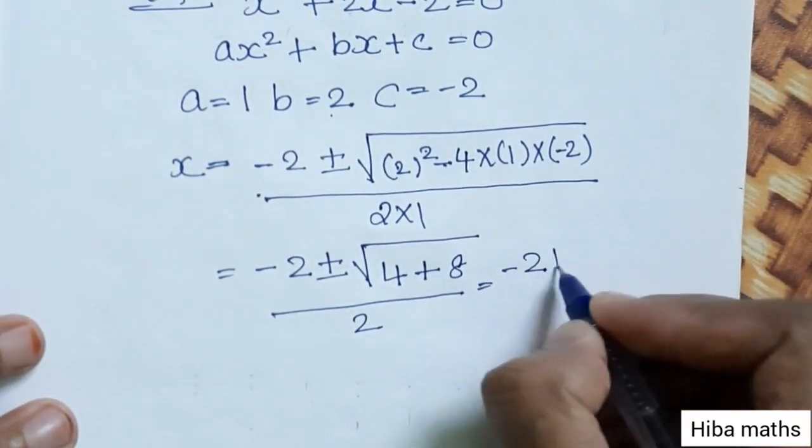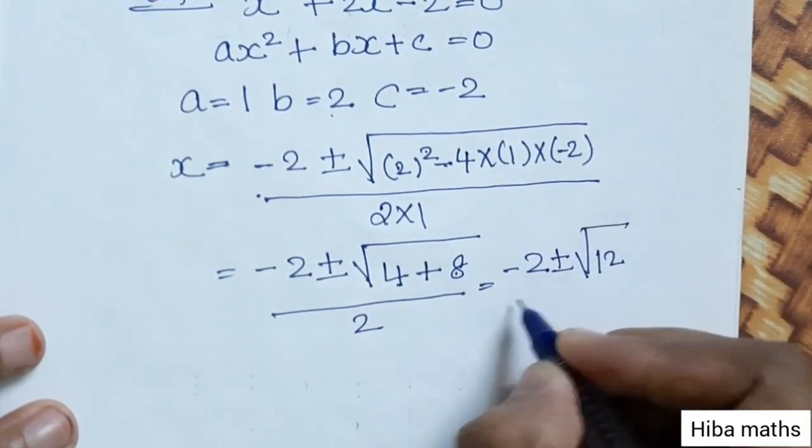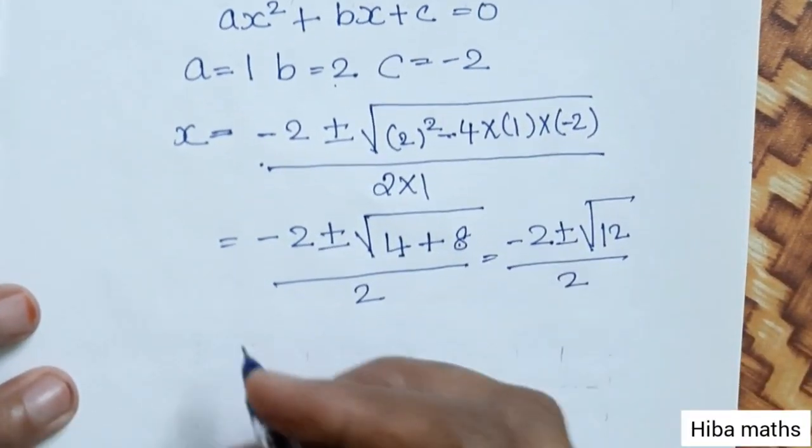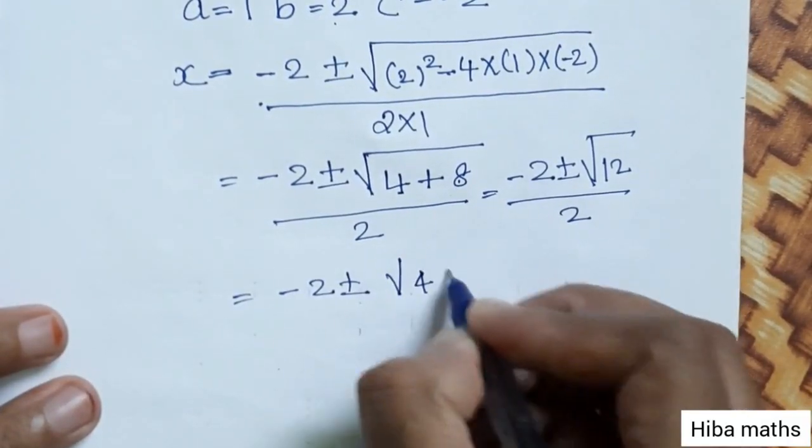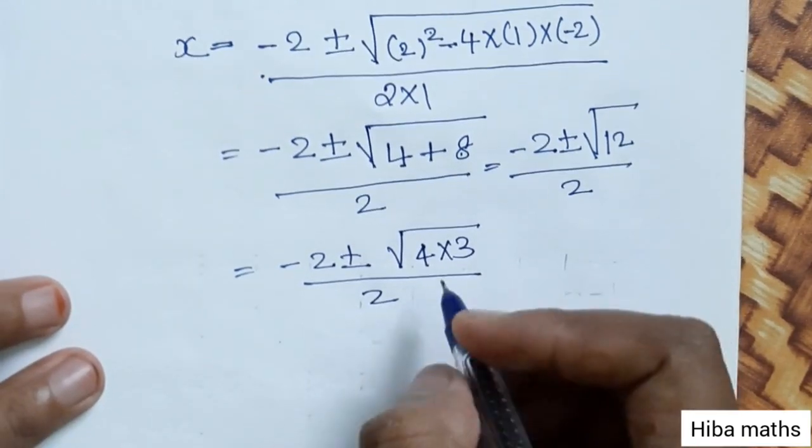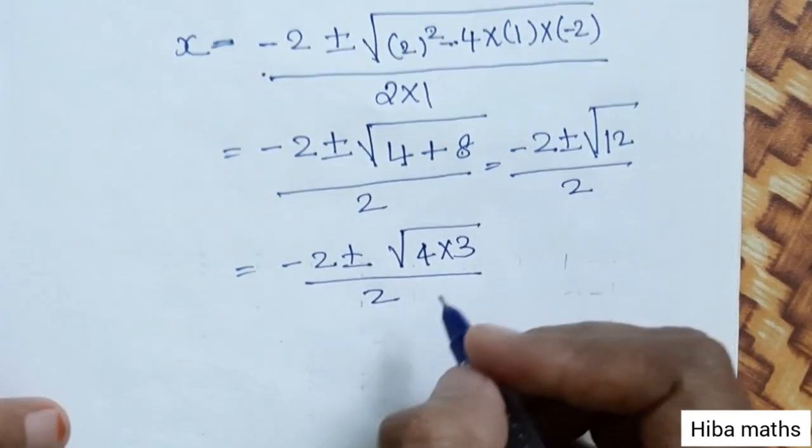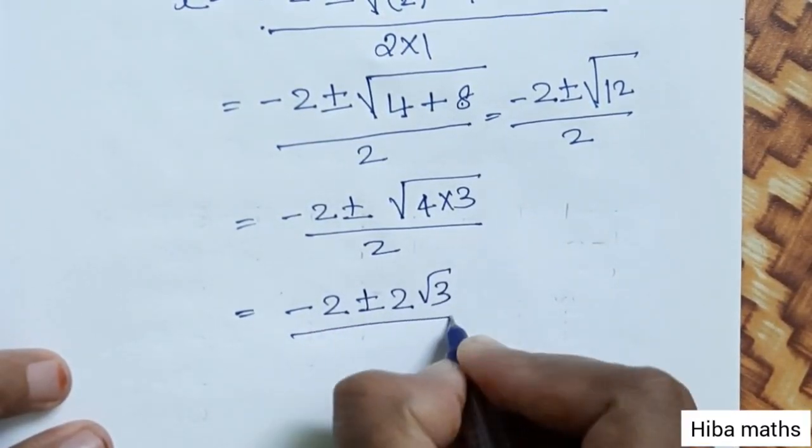Minus 2 plus or minus root of 4 plus 8 is 12, divided by 2. Root 4 times 3 is 12. Root 4 is 2. That is the value. Minus 2 plus or minus 2 into root 3 by 2.